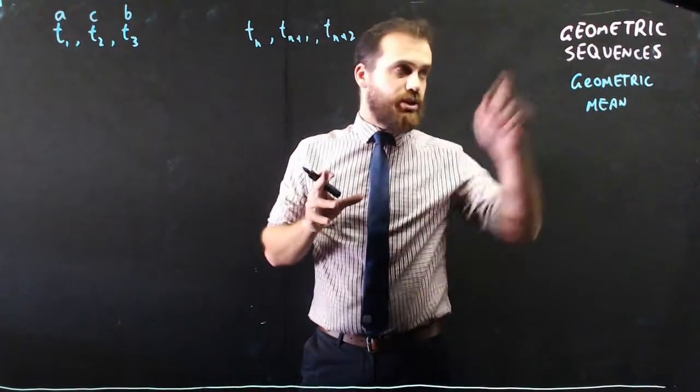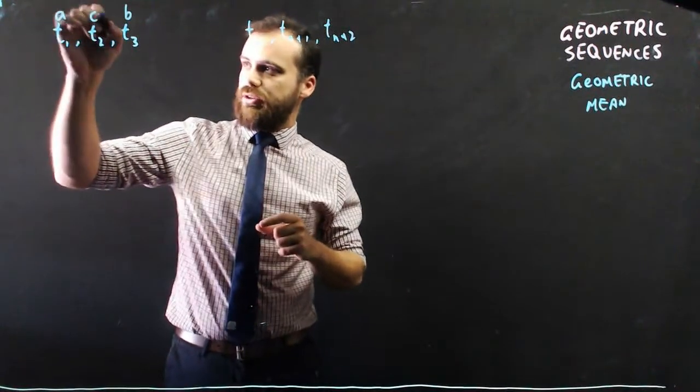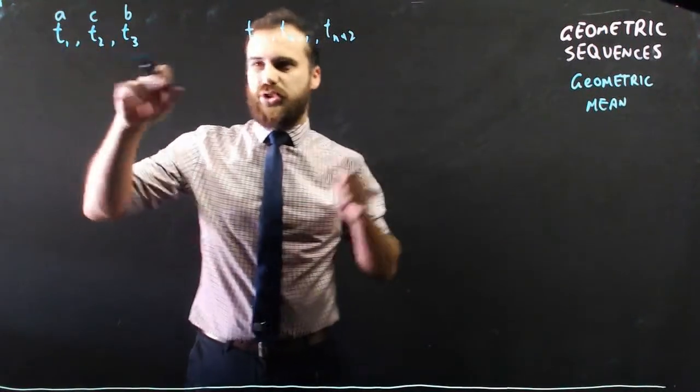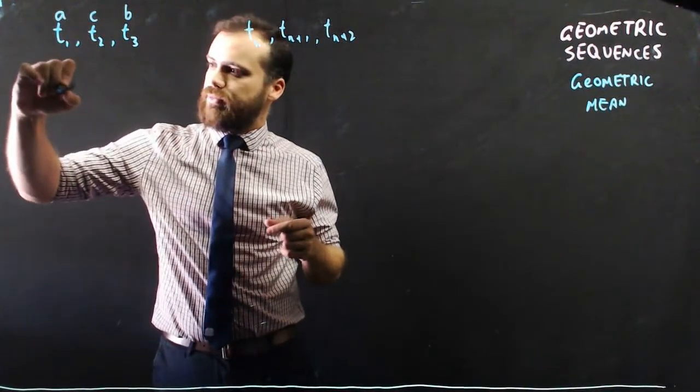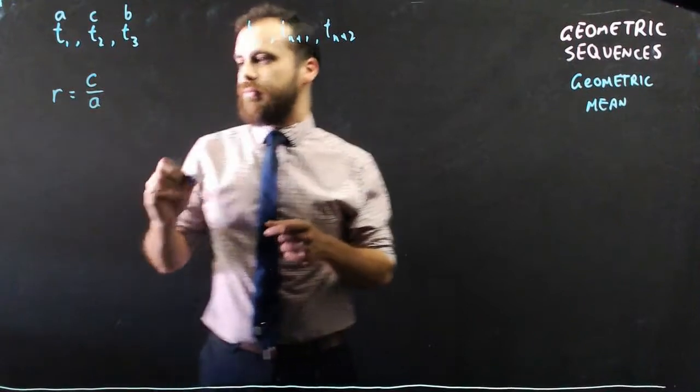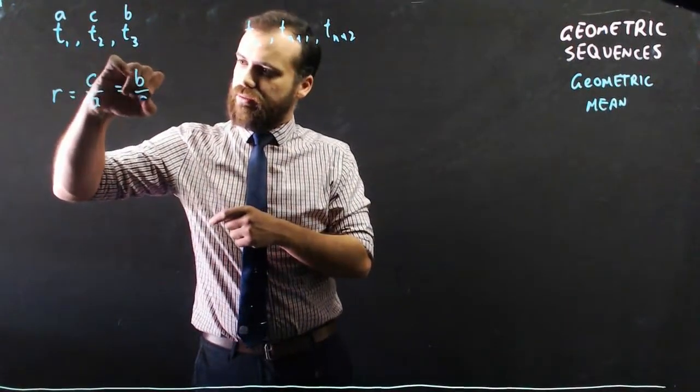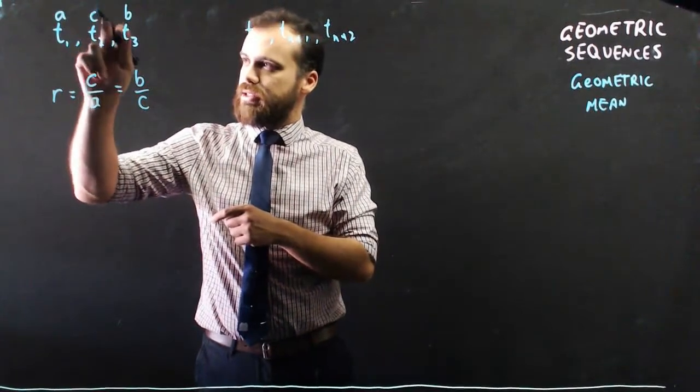Now, think about how geometric sequences work. The common ratio between term 2 and term 1, or term n plus 1 and term n, is going to be C divided by A. But the ratio is also going to be B divided by C.